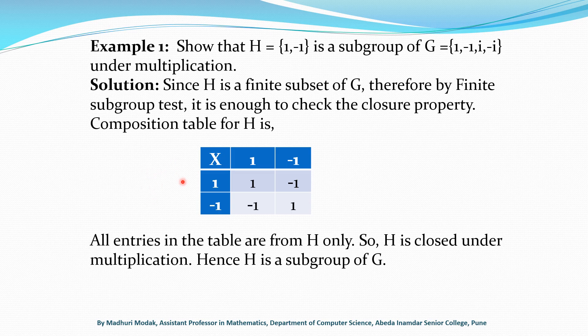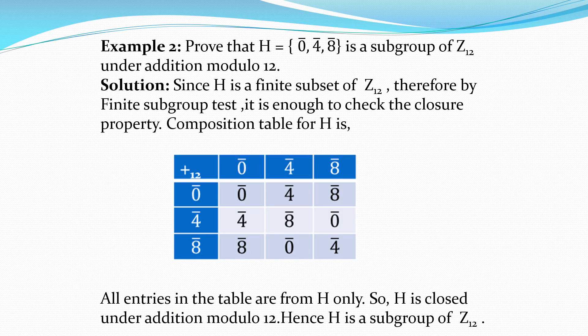Now: 1×1 = 1, 1×(-1) = -1, (-1)×1 = -1, and (-1)×(-1) = +1. Observe that all elements of this table are from H only. So we can say H is closed under multiplication. Hence, by the finite subgroup test, H is a subgroup of G.